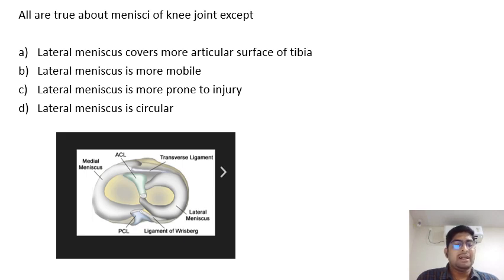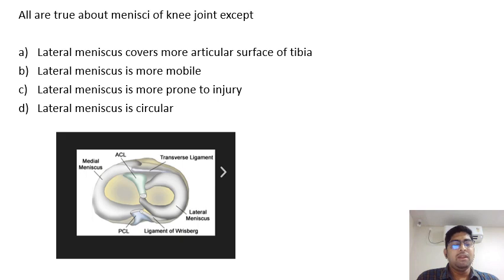The body of the medial meniscus is attached to the joint capsule along with the medial ligament. But the lateral meniscus is free from any attachments to the capsule. Only the posterior horn of the lateral meniscus is attached to the posterior cruciate ligament — that is PCL — with the help of two small ligaments called the ligament of Wrisberg and the ligament of Humphrey.